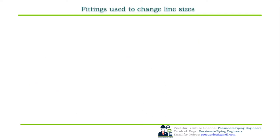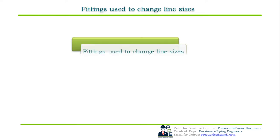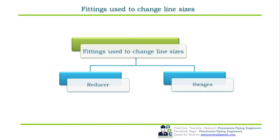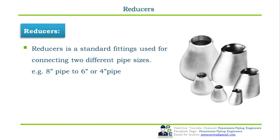First, let's see which pipe fittings are used to change the line or pipe sizes. The two fittings widely used are: first, reducers, and second, swedges. Only these two fittings are widely used to change line sizes in the whole industrial piping.